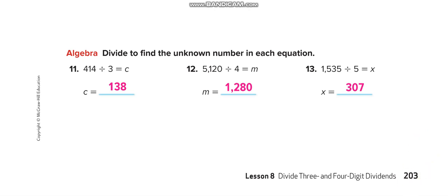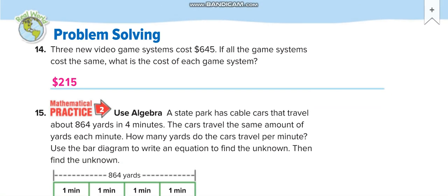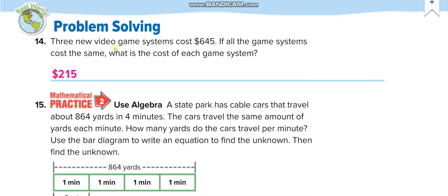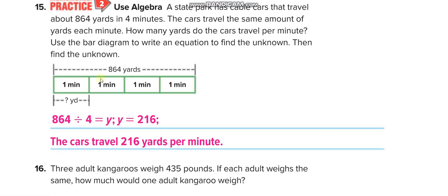Three new video game systems cost $645, so 645 divided by 3 is $215. You can divide it here. 864 divided by 4 minutes, so 216 yards per minute. You can divide it here using long division.